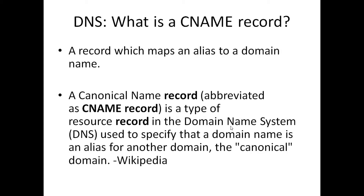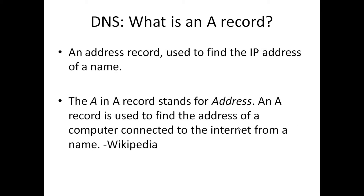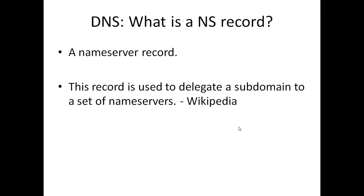You're going to have to know your three DNS records — that's a pretty common interview question. Your CNAME is going to be your alias, and your A record is an address mapping an IP to a name. Your NS record is your name server record, which, according to Wikipedia, delegates a subdomain to a set of name servers.